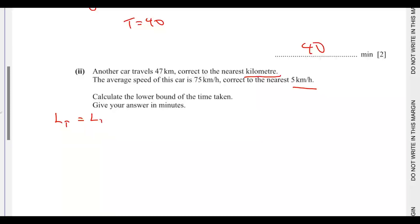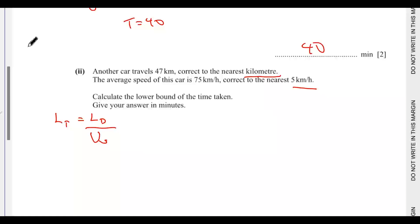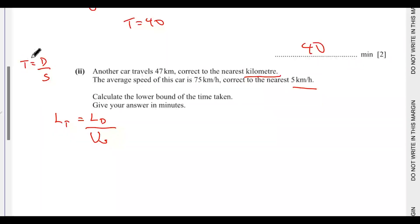The formula is: lower bound of time equals lower bound of distance over upper bound of speed. This is because for division and subtraction, you have to change the pattern. To get the lowest possible value, we must divide by the upper bound of speed. This comes directly from time equals distance over speed.